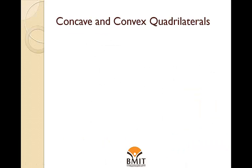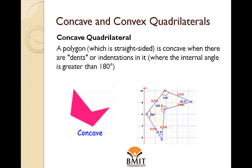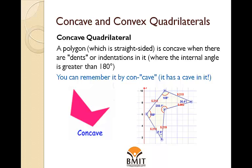Concave Quadrilateral: A polygon which is straight-sided is concave when there are dents or indentations in it where the internal angle is greater than 180 degrees. You can remember it by concave — it has a cave in it.